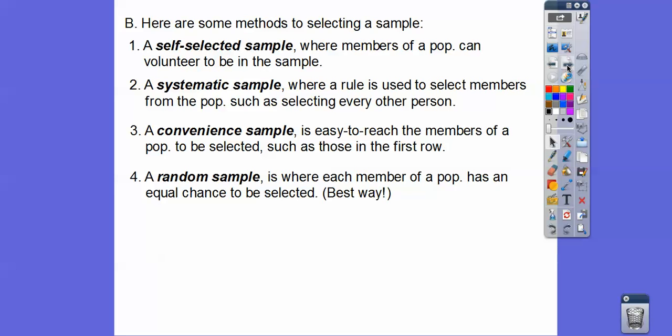Here's the best way. A random sample is where each member of a population, every member in the population, has an equal chance to be selected. That is the best way.